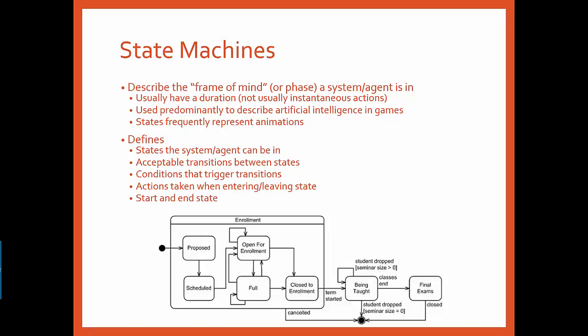Usually these states represent a phase with some duration and not normally just an instantaneous action. In terms of agents, a state might represent an animation which would obviously have a duration. The machine itself starts with this system of states and then defines what are acceptable transitions between states, under what conditions can these transitions occur, what actions are taken before, during, and after a transition, and where does the machine start and end.